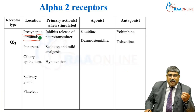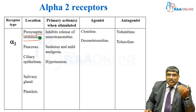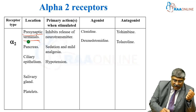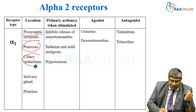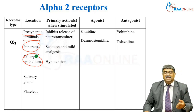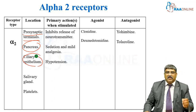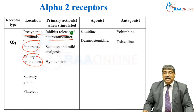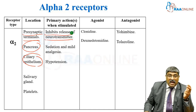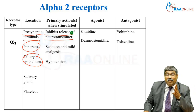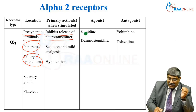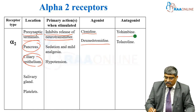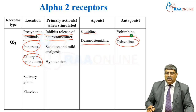Coming to alpha-2 receptors — they are located in the presynaptic terminal of the postganglionic neuron, pancreas, ciliary epithelium, salivary glands, and platelets. Alpha-2 receptors inhibit the release of neurotransmitter. They can produce hypotension, sedation, and mild analgesia. Agonists include clonidine and dexmedetomidine, and antagonists are yohimbine and tolazoline.